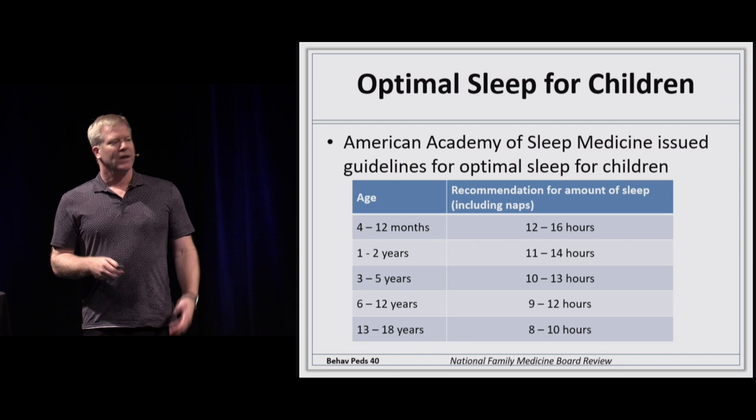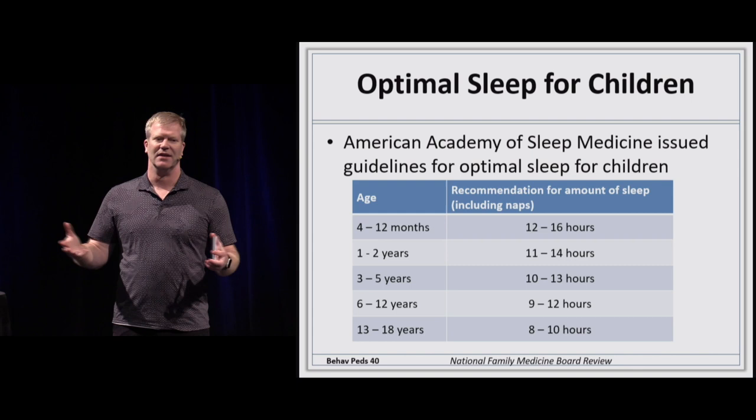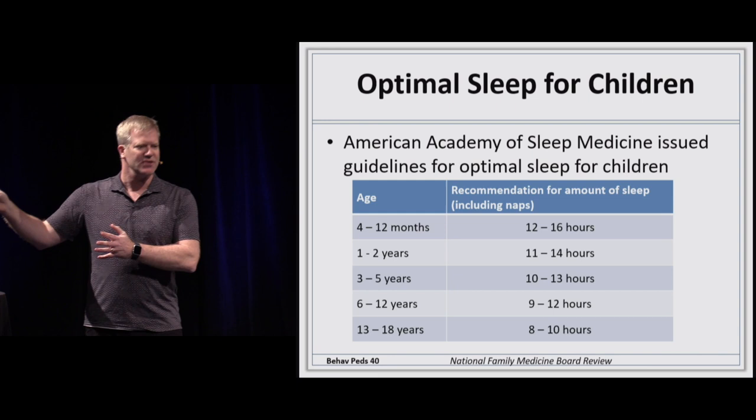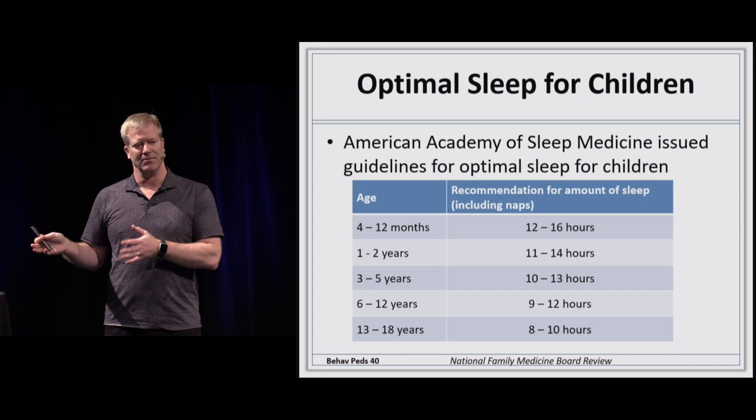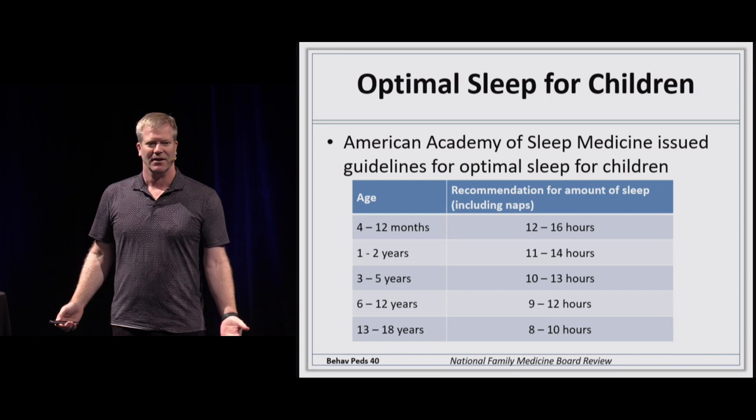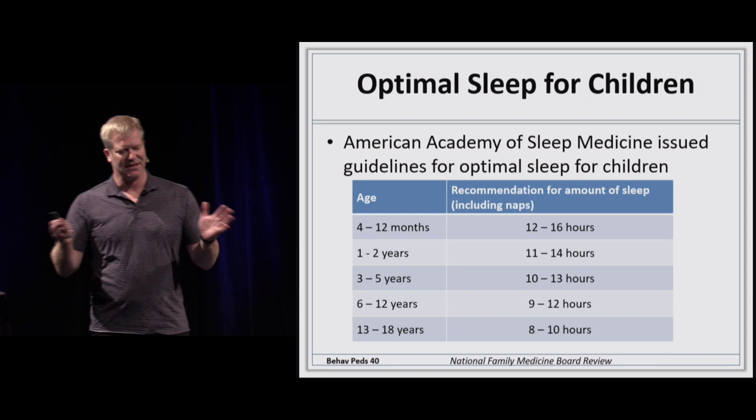Regarding normal sleep amounts: babies sleep a lot, but teenagers actually need less sleep than babies — they still need 6 to 10 hours. The issue is that teenagers stay up until 2 AM on their phones, which is why they seem tired and don't get up early. They don't sleep the 12 to 14 hours seen in younger age groups.